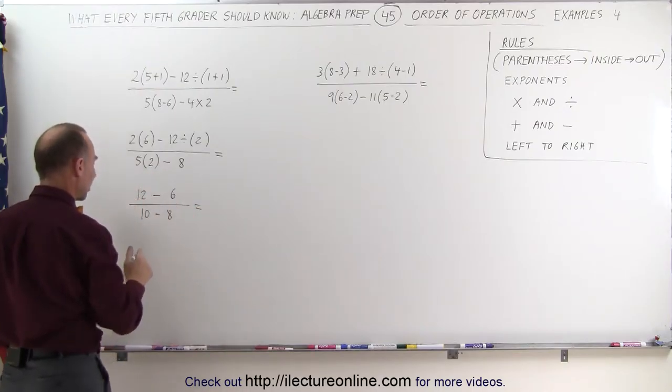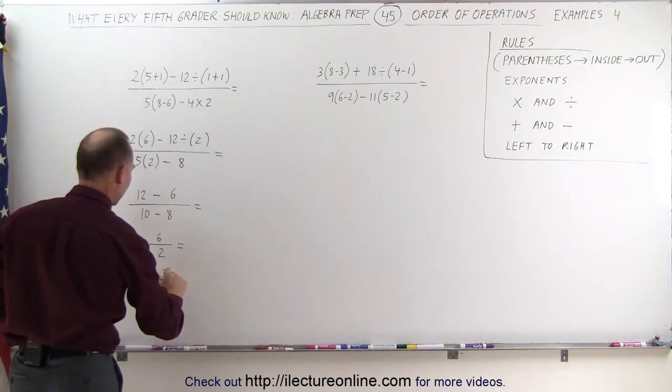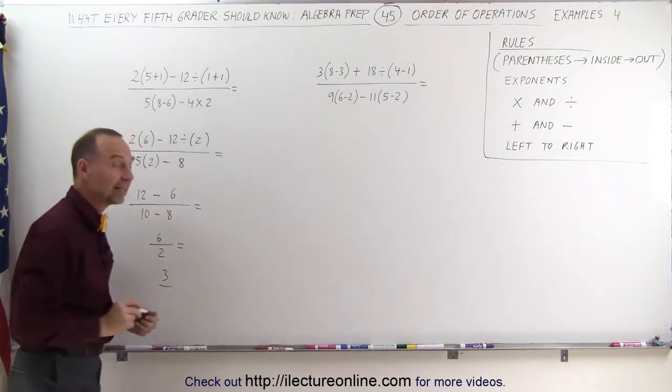Now we can do the subtraction: 12 minus 6 is 6, divided by 10 minus 8 is 2. And finally, 6 divided by 2 is 3, and that is the final answer.